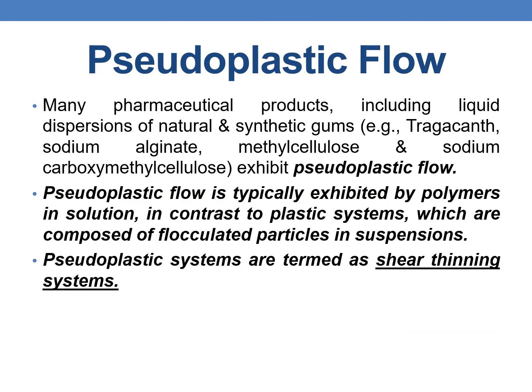Coming to pseudoplastic flow, many pharmaceutical products including dispersions of natural and synthetic gums — for example, tragacanth, sodium alginate, methylcellulose, and sodium carboxymethylcellulose — exhibit pseudoplastic flow. The pseudoplastic flow is typically exhibited by polymers in solution, in contrast to plastic systems which are composed of flocculated particles in suspensions.